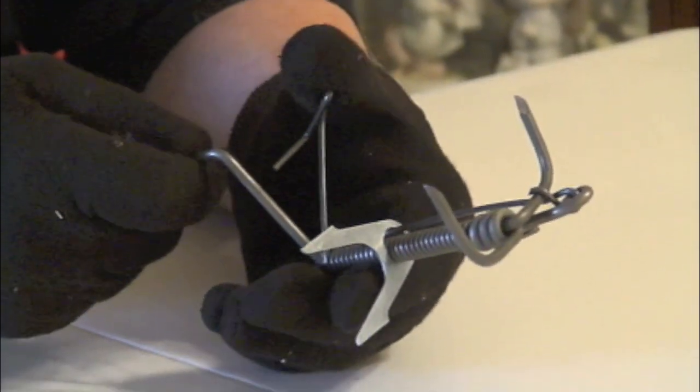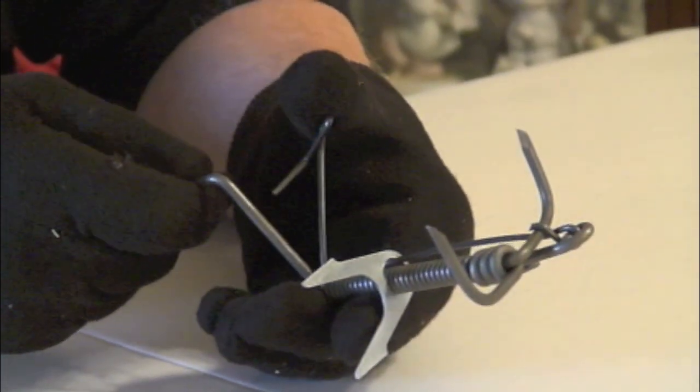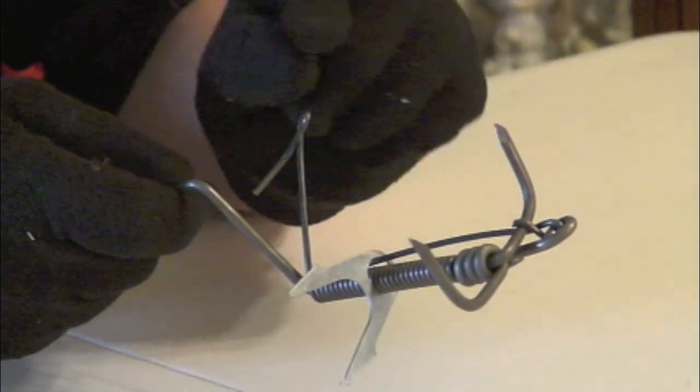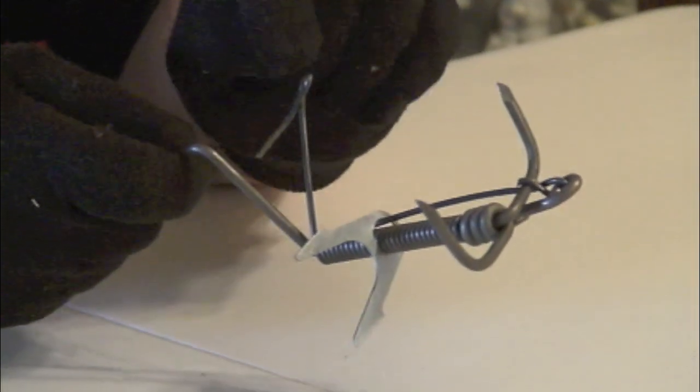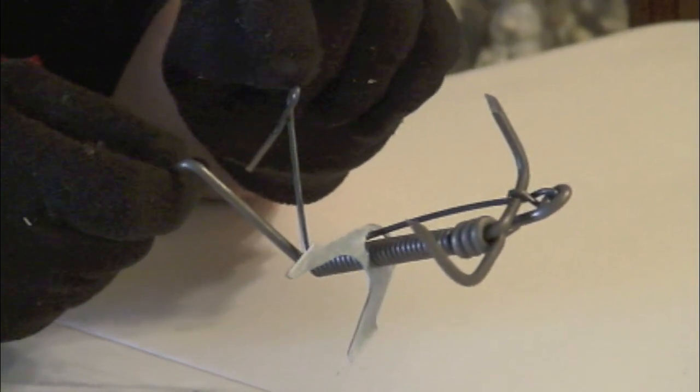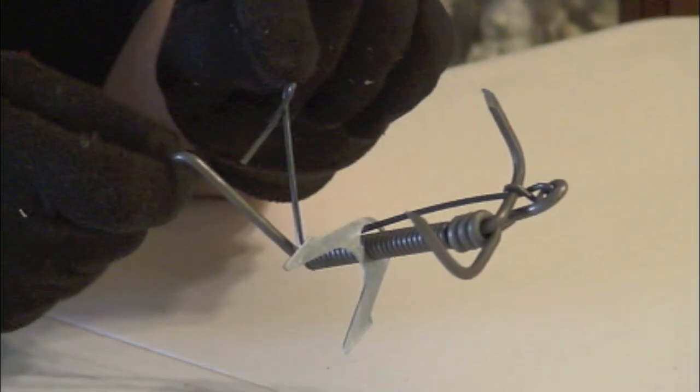Now, the second thing that people do wrong with the DK1 is they want to turn this part. This part does not turn. If you turn this part, you will ruin the whole trap.